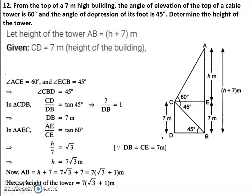Students, let us interpret the figure first. In the question, we have a cable tower. AB is the cable tower. And you have a building — the building is indicated as CD. The height of the building is given as 7 meters, that is CD is equal to 7 meters. The height of the tower is indicated as AB.